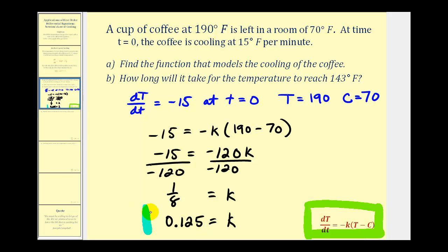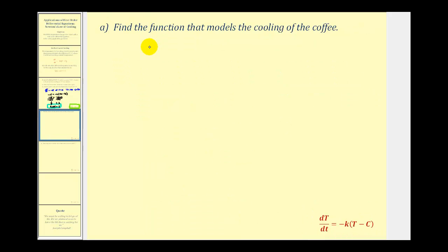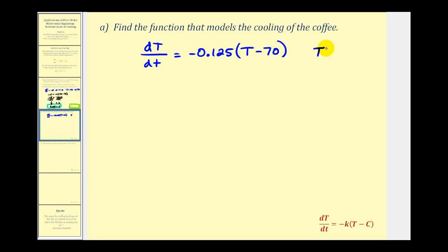Now that we know K, we're going to substitute this value into Newton's law of cooling to solve this differential equation. So now we know dT/dt is equal to negative 0.125 times the quantity T minus 70. We know the temperature of the room will not change, so we also know that big T of zero, the starting temperature of the coffee, is 190. So now we can solve this as an initial value problem using separation of variables.